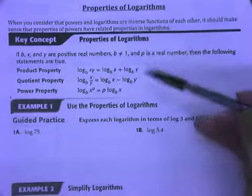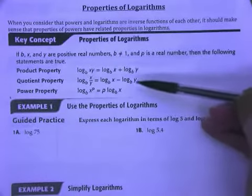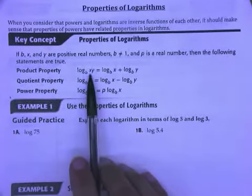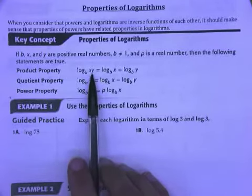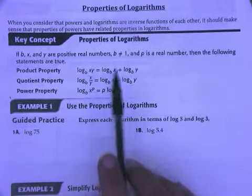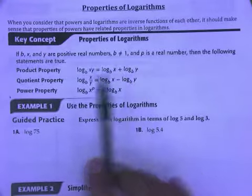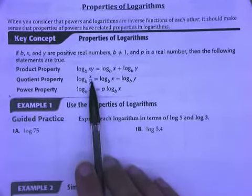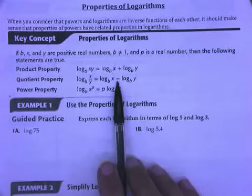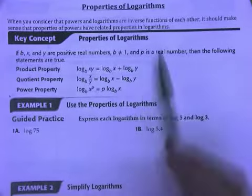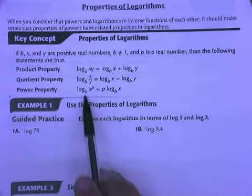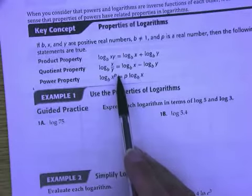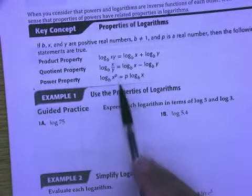So first we have the product property, quotient property, and power property. If we can take the log of a product, that would be equivalent to taking the sum of the log of the two factors. Similarly, the quotient property: if I'm taking the log of a quotient, that would be equivalent to the difference of the logs of those two divisors. The power property, you can think of as taking a log of a power and the exponent kind of getting thrown to the front of your expression as a coefficient.